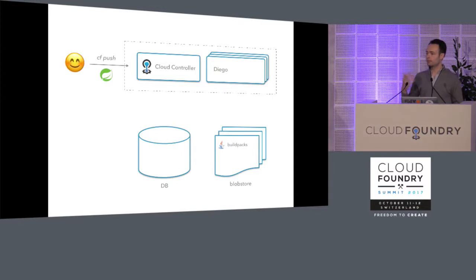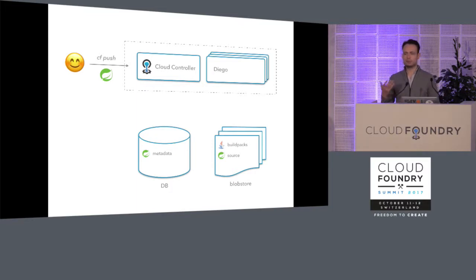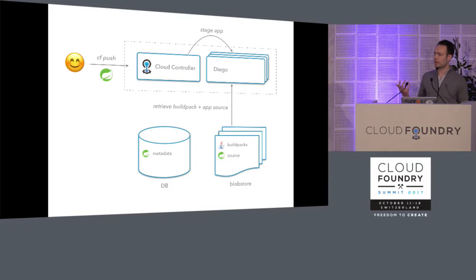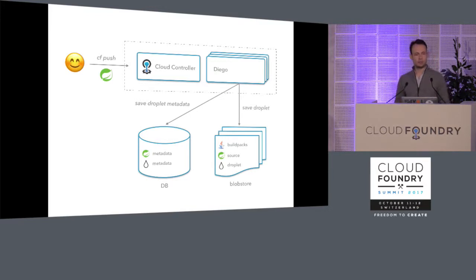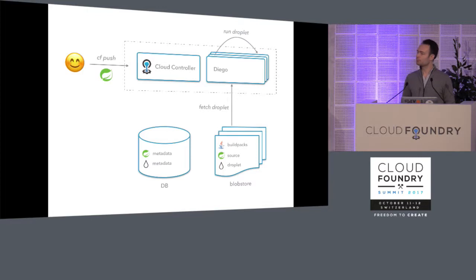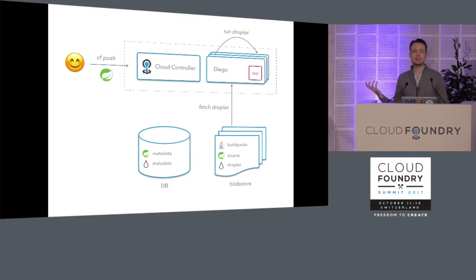So if a CF user does a CF push of their Spring app, they push their app bits to the Cloud Controller, which saves some metadata to the database about that app and then saves the app source into the blob store. Next, Diego sees it needs to run an app, receives a request for a long-running process, pulls up the build packs and app source, stages the app — essentially compiling it into a droplet. Details are saved into the database, the droplet itself is saved to the blob store, and then Diego can run it. If we want to backup and restore Cloud Foundry consistently, we need both data stores and must take a backup from them at exactly the same time, because if your database points to a compiled droplet that's not in the blob store, Diego's going to try to start that app and find it's missing the droplet.